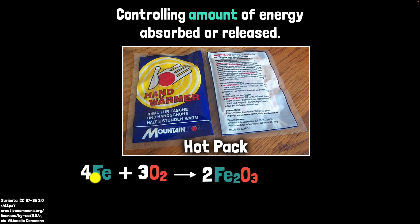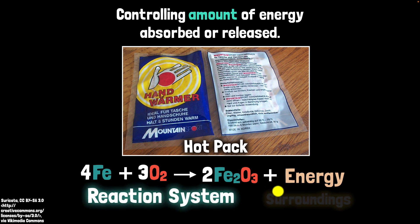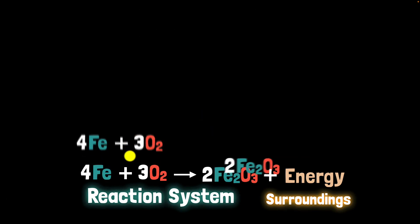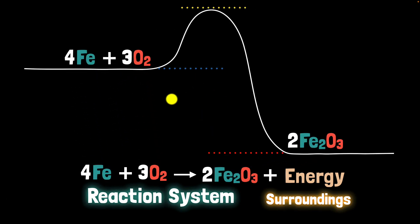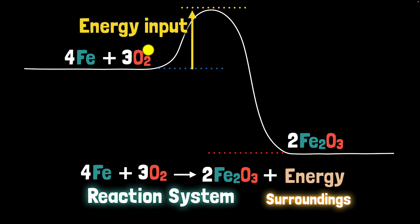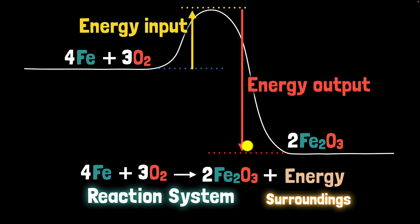For a hot pack example, consider iron reacting with oxygen to form iron(III) oxide — an exothermic reaction. Energy goes from the reaction system into the surroundings because this atomic arrangement has higher chemical energy. When going from reactants to products, certain bonds are broken — like pulling magnets apart, requiring energy — and then new bonds are formed, releasing energy, like magnets snapping together.